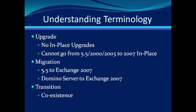For some, when they think of an upgrade, they think of taking their Exchange system, popping in a DVD, and upgrading that system in place. That simply isn't a possibility with Exchange 2007. The reason for this is that Exchange 2007 didn't run on the 64-bit platform for Server 2003. So you are required to set up a new server with the proper 64-bit operating system, and then you can install Exchange 2007 on that new server.